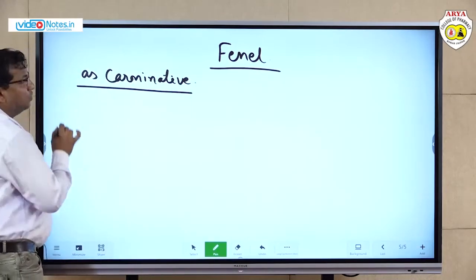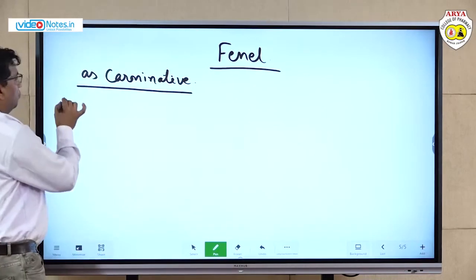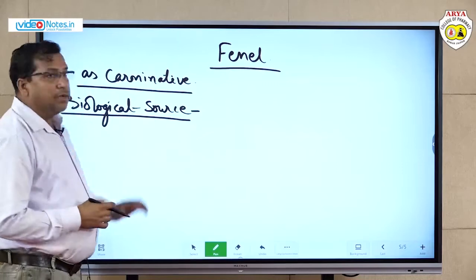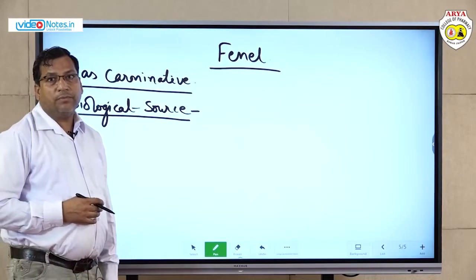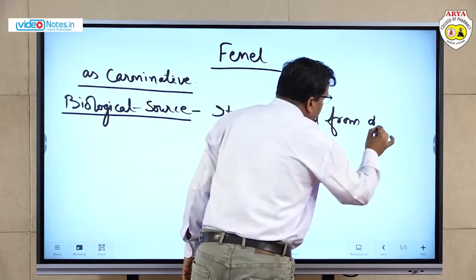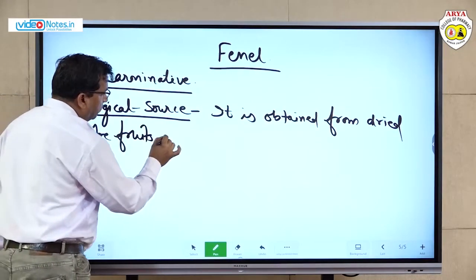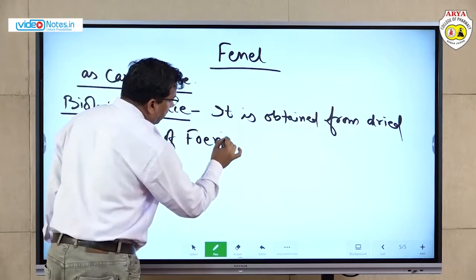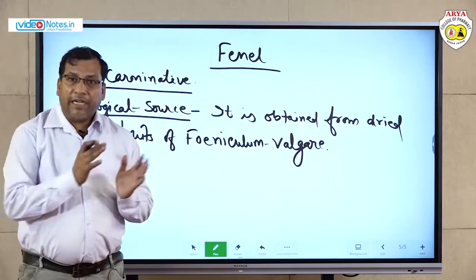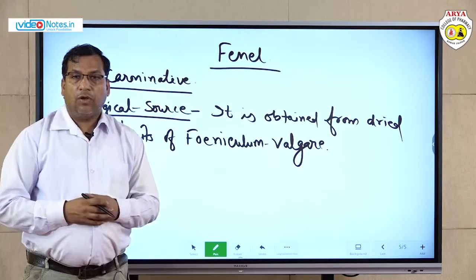The biological source of fennel: it is obtained from the dried ripe fruits of Foeniculum vulgare. Foeniculum vulgare is the scientific name of the fennel plant, from which we obtain volatile oils, carbohydrates, and other compounds.